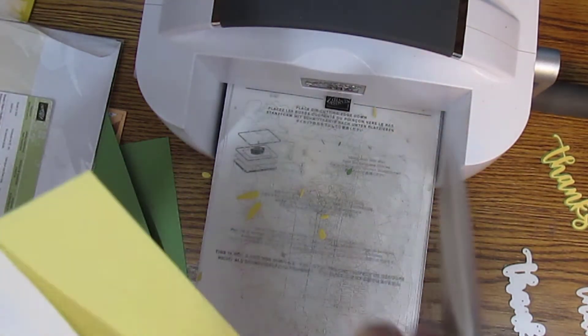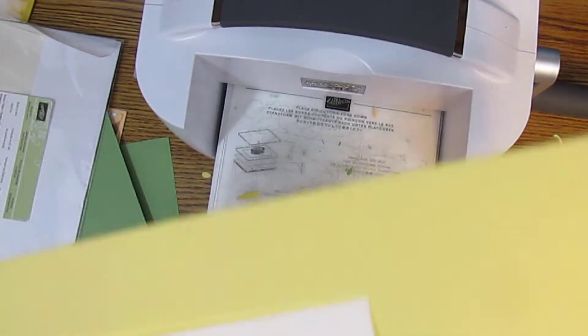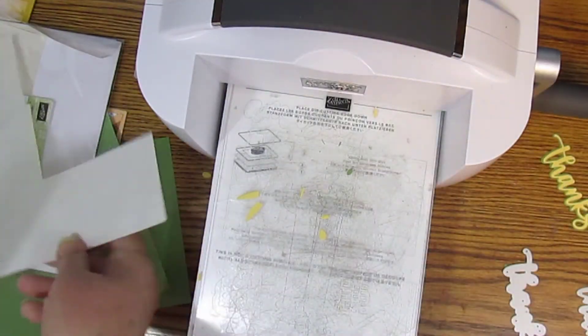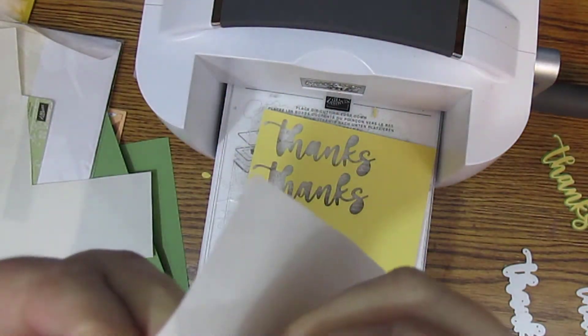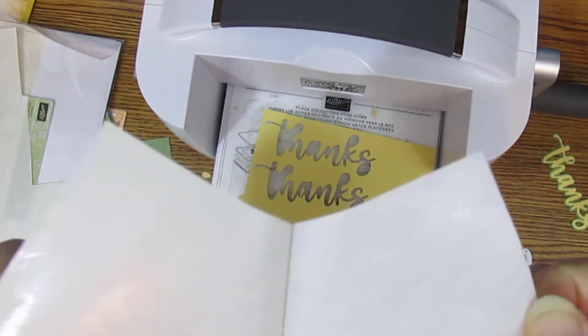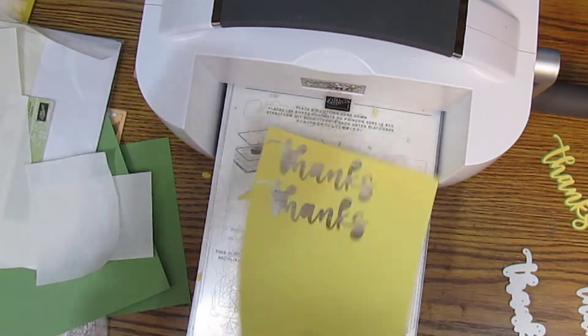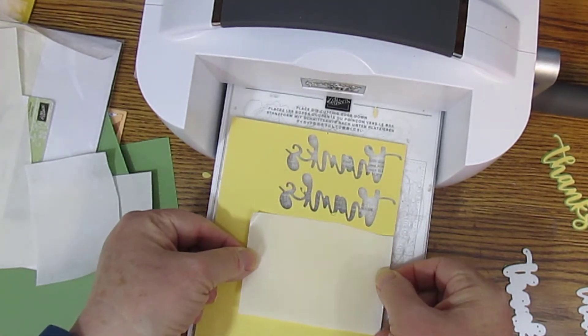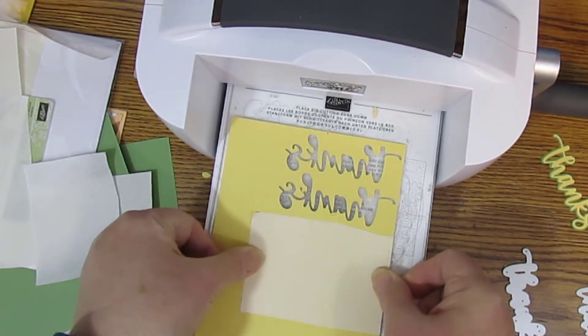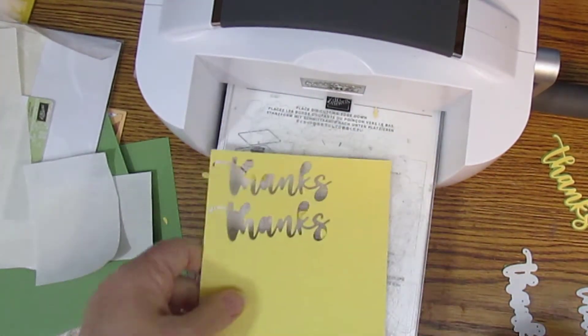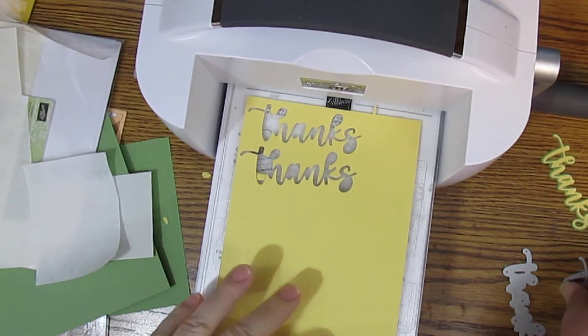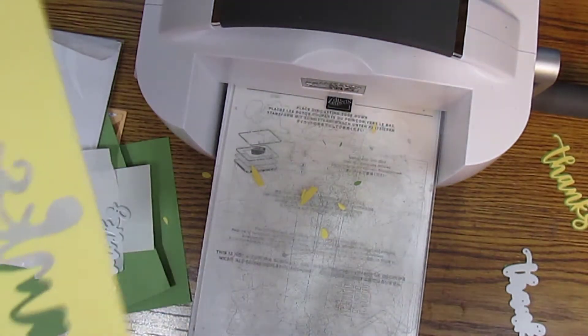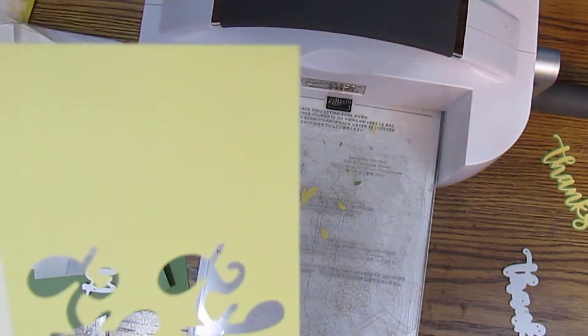Alright, this is an adhesive sheet and we are going to cut it out. I like to leave a little bit extra just to make sure. Okay here we go. One side will end up with the sticky side and that's what we will put on our cardstock. And we will again cut two of these. If you want you can cut your cardstock out so it's the same size so you know you get it all.